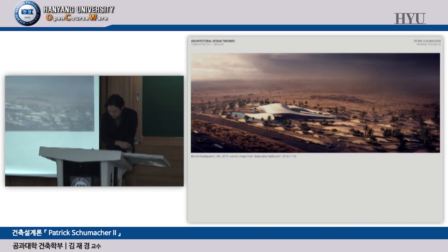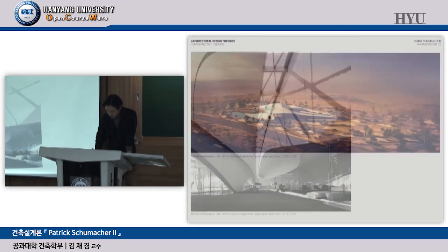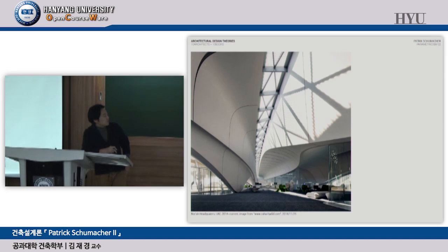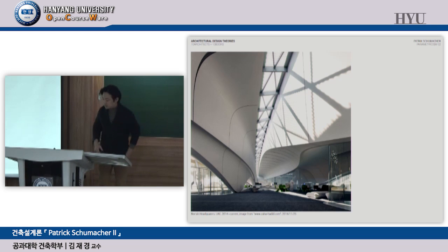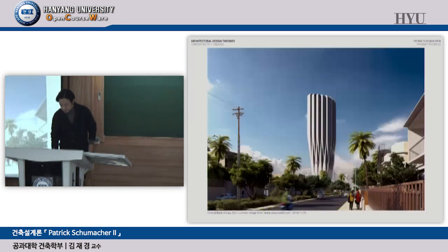This is a project in the Arab Emirates/UAE — they have money so they can probably build it. The Saudi Arabia project is even more complicated. All these patterns are parametric. You don't necessarily need parametric tools to generate the forms, but to construct them you must panelize the surfaces using digitalization — the same approach used for DDP.